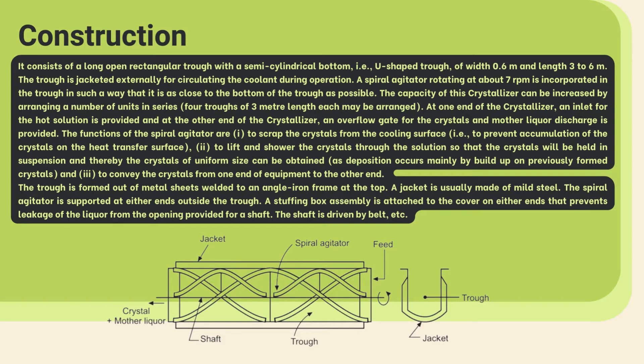The spiral agitator also conveys crystals from one end of the crystallizer to the other. The trough is made up of metal sheets welded to an iron frame. The material of construction of the jacket is usually mild steel. The spiral agitator is supported at either end outside the trough, and a stuffing box assembly is attached at either end to prevent leakage. This concludes the overall construction of the Swenson Walker crystallizer.